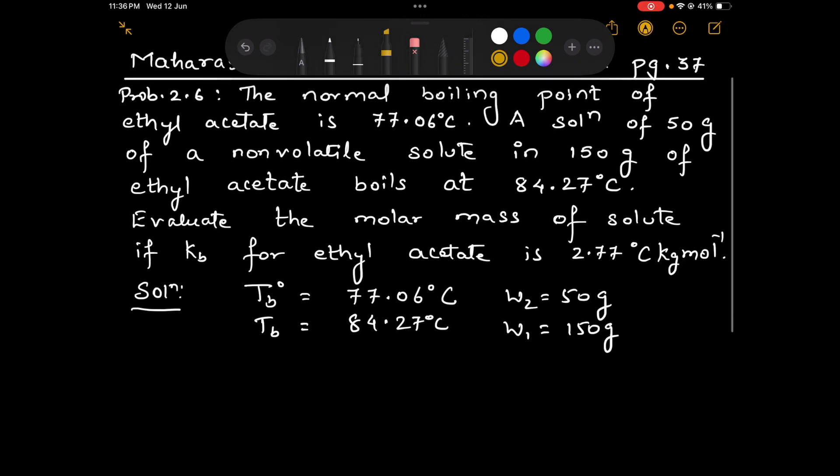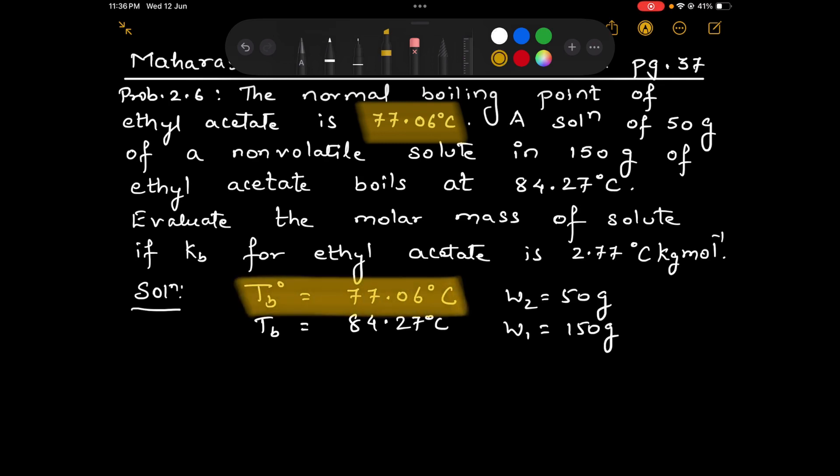The normal boiling point of ethyl acetate is 77.06 degree Celsius, that is TB0 equals 77.06 degree Celsius.